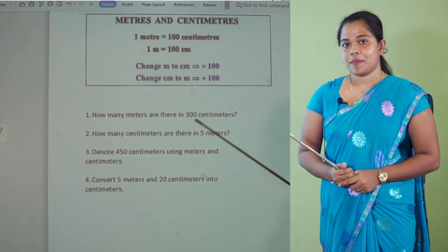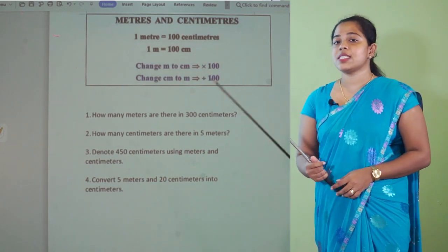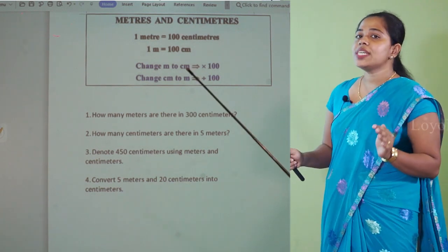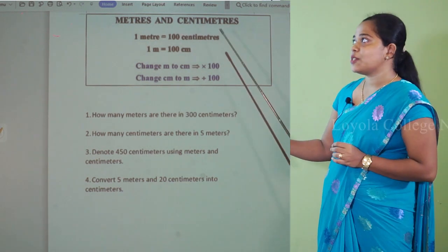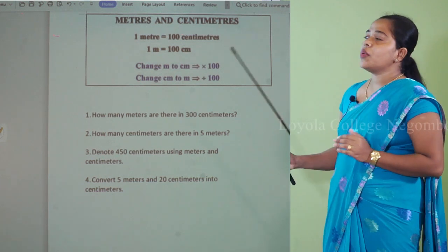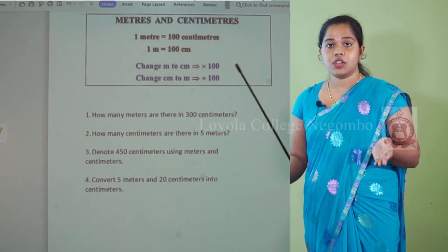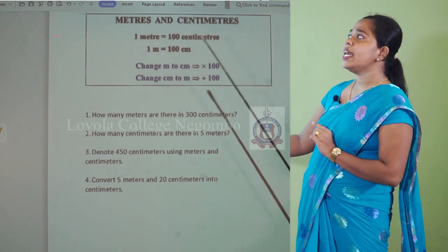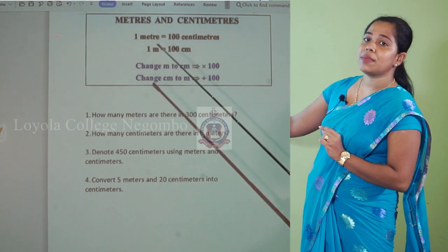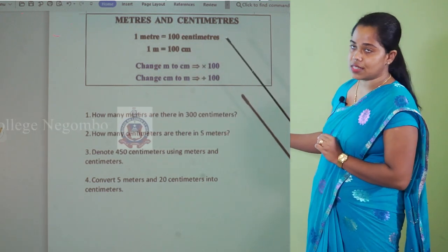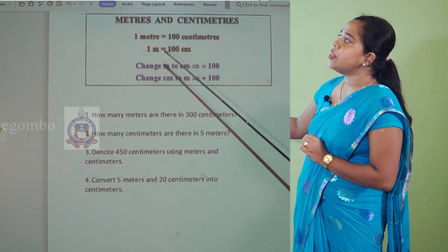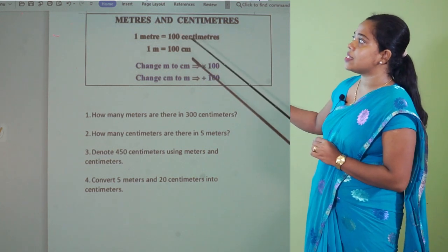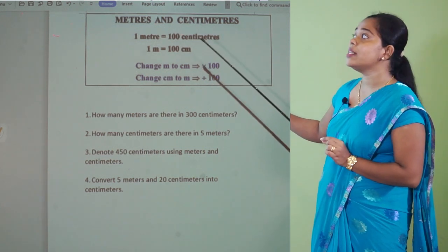Puti, do you know what is a length? A length is the distance between two points. To measure this length we use meters and centimeters. Now in length and distance part 1 you all learnt that 1 kilometer equals 1000 meters. Here we are learning that 1 meter equals 100 centimeters. The symbol we use to denote centimeters is simply cm.